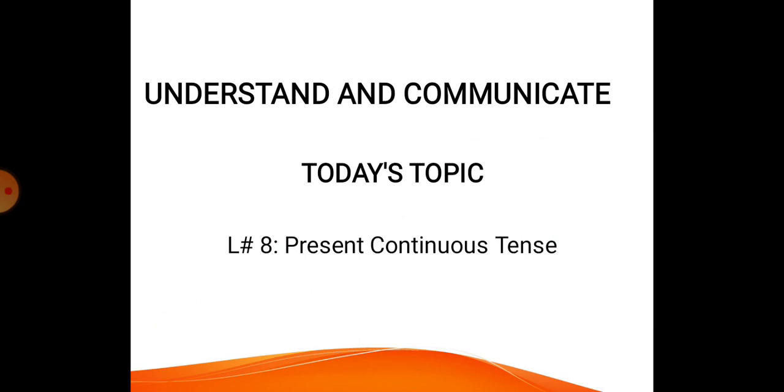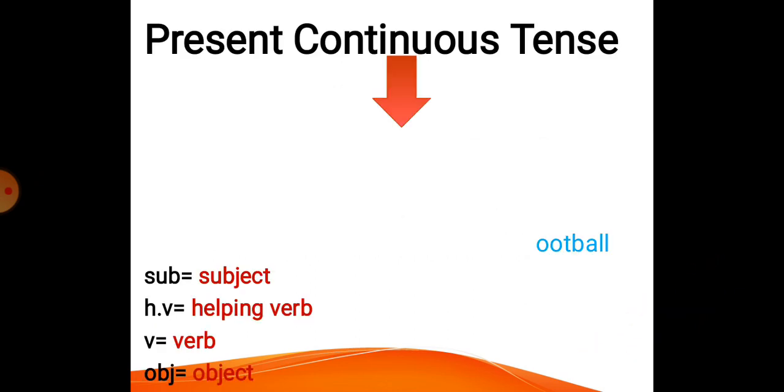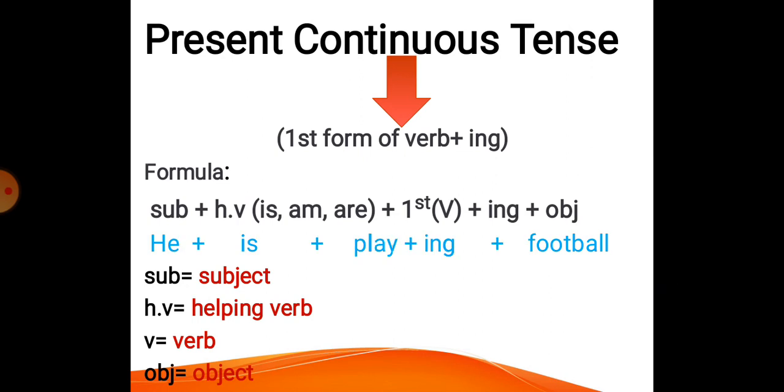To understand this tense in a better way, I have designed a formula. If you will learn this formula, it will be easy for you to make sentence for any form of verb. The basic feature or sign of continuous tense is first form of verb plus ing.